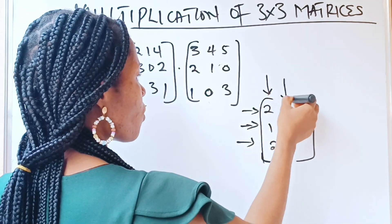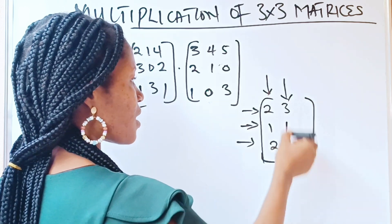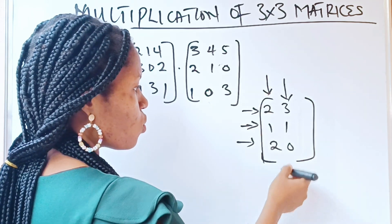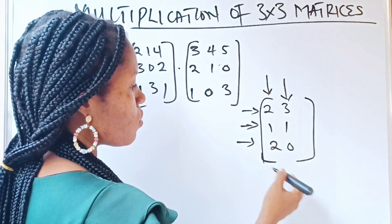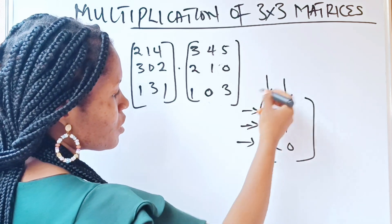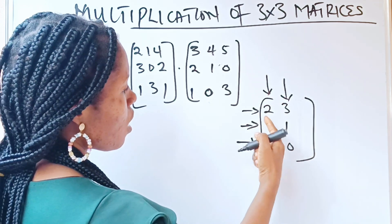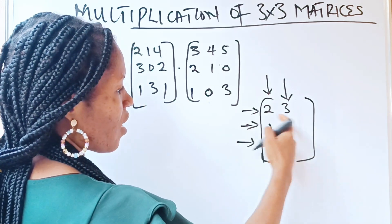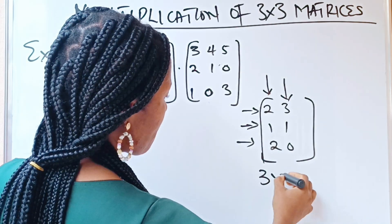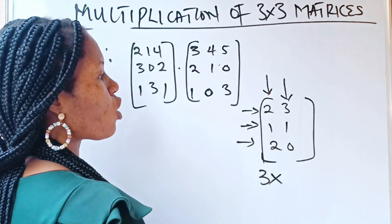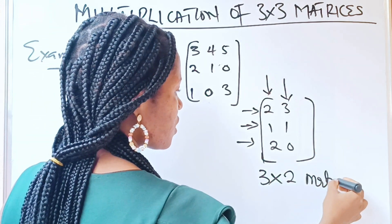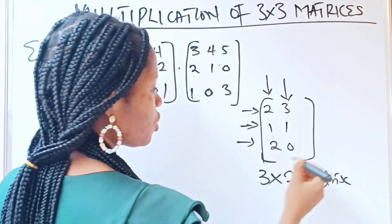When I talk of a column, I talk of the vertical ones. So 2, 1, 2 is the first column, and 3, 1, 0 is the second column. If I should name this particular matrix, I would say it has three rows and two columns — so it's a 3 by 2 matrix.